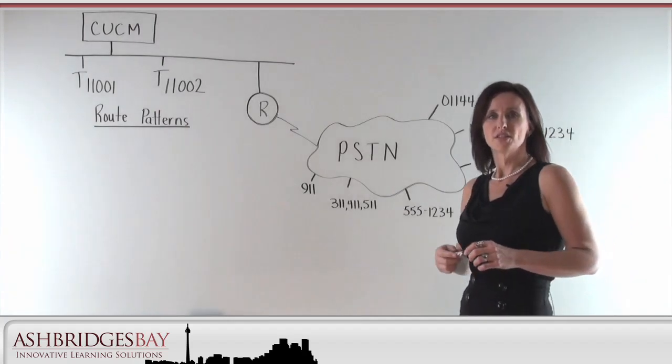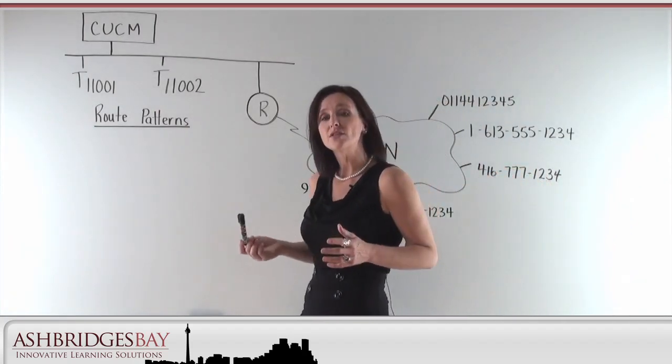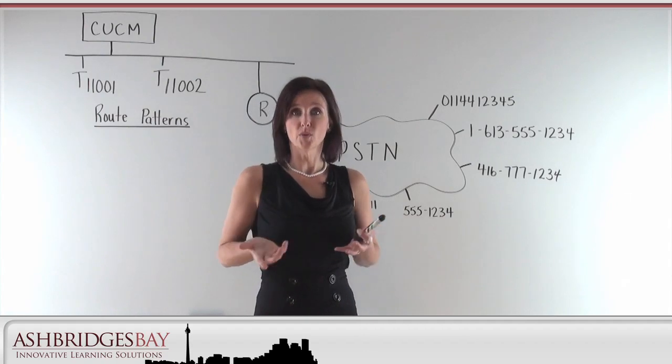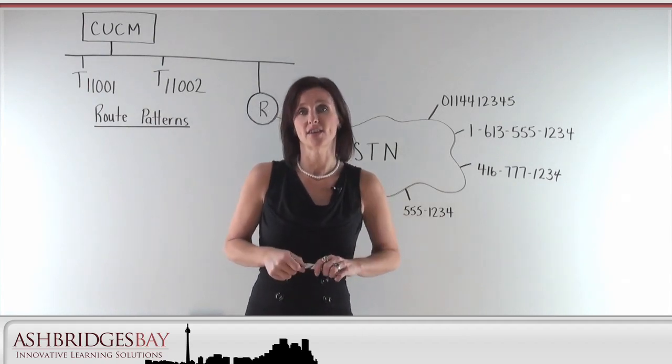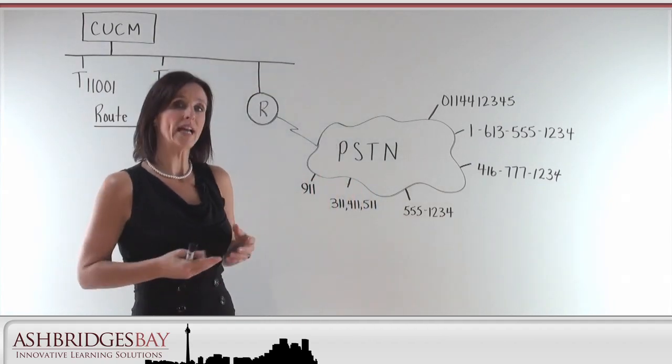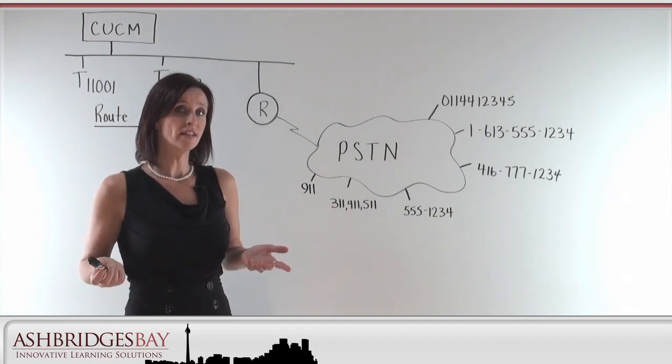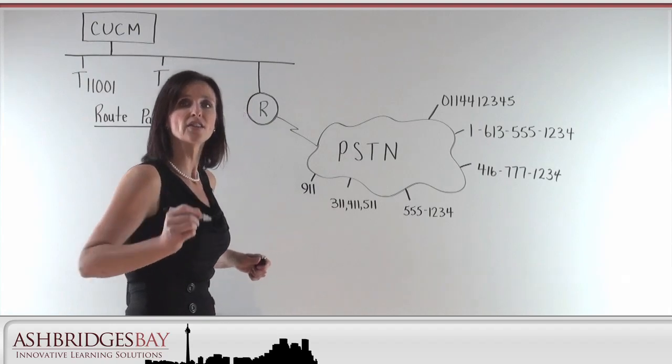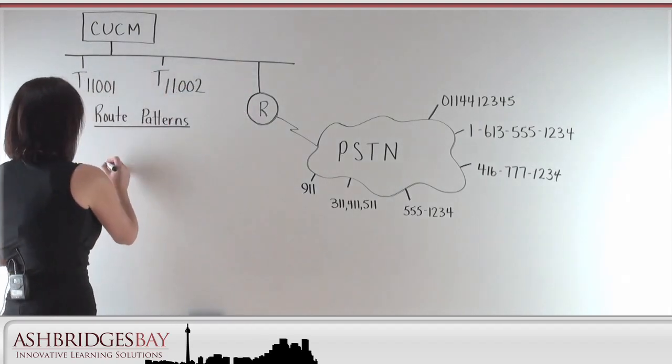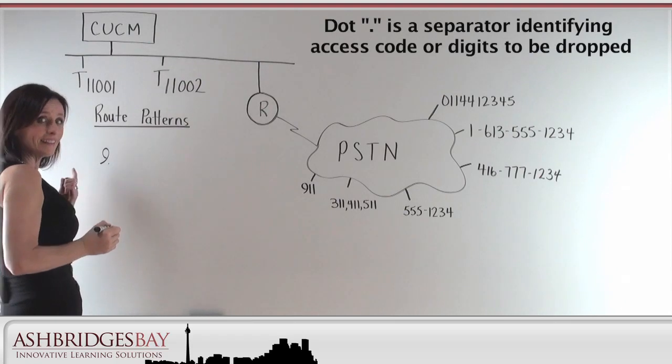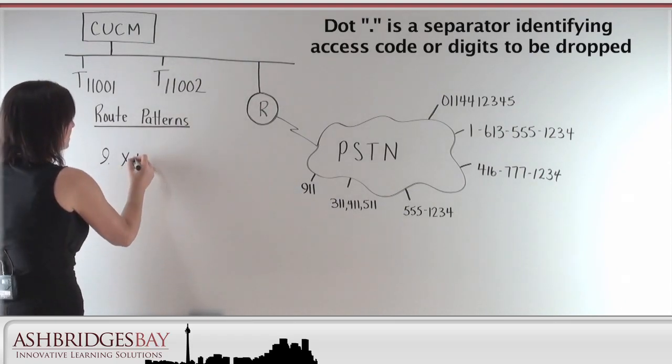So, what do companies do to differentiate between internal numbers and external numbers? Usually, you dial eight or nine. Nine is an access code that helps us differentiate between external numbers and internal extensions. So, let's take a look at an access code. Let's take a look at seven-digit dialing. I can put in the nine with a dot to indicate that the nine is an access code. And seven X's.